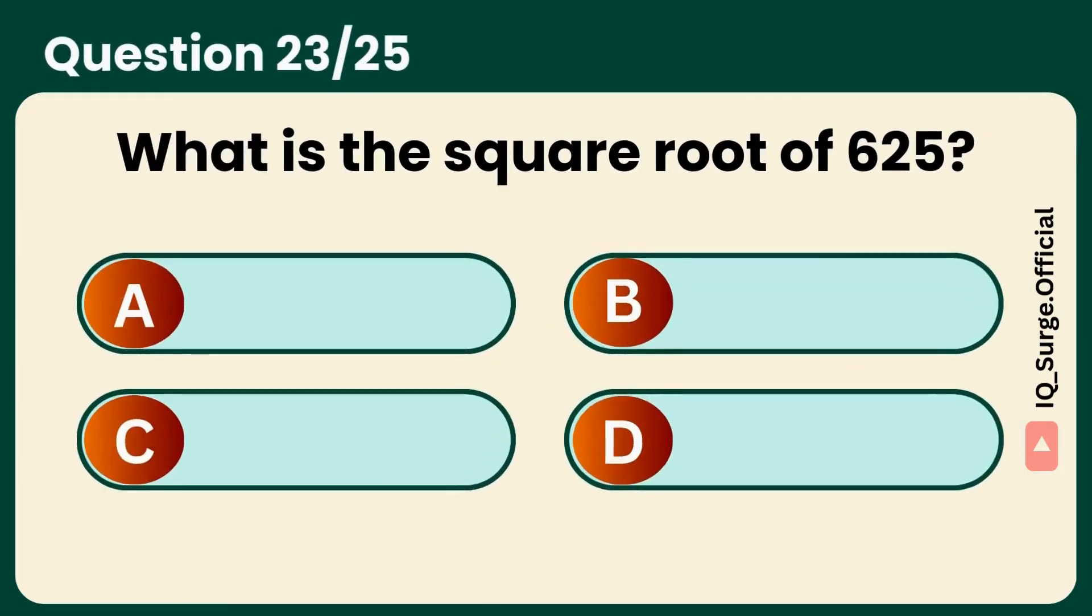What is the square root of 625? Answer: 25. A classic square for sharp minds.